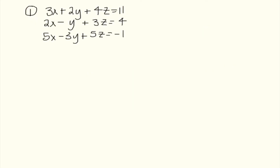Here's our first example: 3x plus 2y plus 4z equals 11; 2x minus y plus 3z equals 4; 5x minus 3y plus 5z equals negative 1. I'm going to label these equation 1, equation 2, and equation 3. That way, when we're talking about it, it's easier to just reference them. Looking at these, I think the easiest thing to do is to cancel out the y.